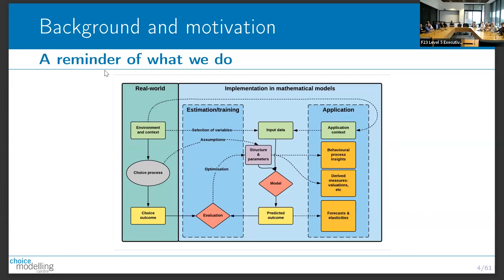As a reminder of what we're actually doing when I talk about choice modeling and travel behavior: we have a real world context where real people make choices, either real or hypothetical. They make those choices in a certain environment using some choice process that we do not observe. Everything we do as choice modelers - and increasingly machine learning - is to replicate that behavior mathematically. We train our models, or as choice modelers tend to say, estimate model parameters on data, and then after training we use them in application.